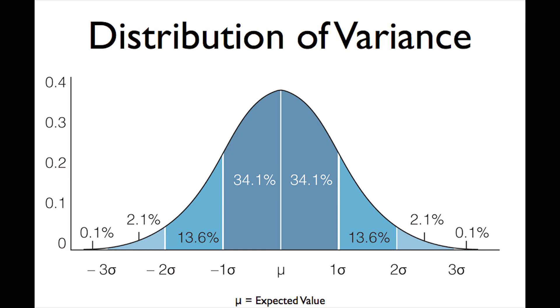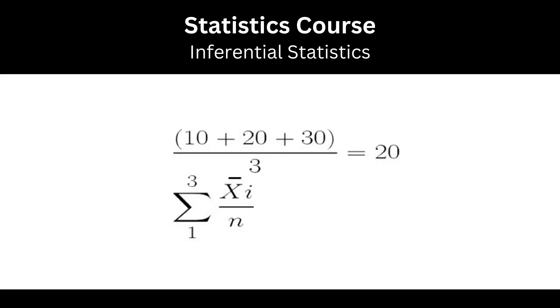The mean, either seen from the sample or from the population, is the sum of all values divided by the size N. So in this case, 10 plus 20 plus 30 divided by 3 is 20.